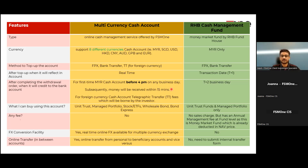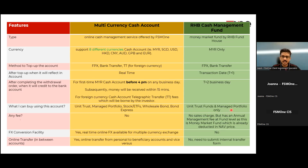For withdrawals from the cash account, normally it's within 15 minutes, but for the first time the bank does verification so it may take until 4 p.m. on a business day. Subsequent withdrawals reflect in your bank account within 15 minutes. For RSP cash management withdrawals, it takes T+2 business days. Using the cash account you can buy unit trust, managed portfolio, stocks, ETFs, wholesale bonds, and bond express. RSP cash management can only be used to buy unit trust and managed portfolio. The cash account has no fee at all.